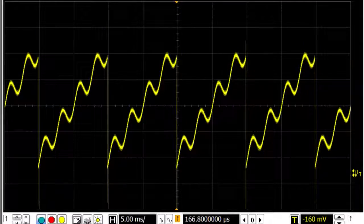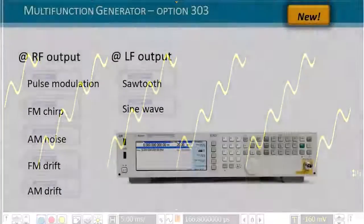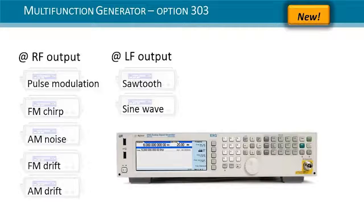And so there you have it. We have not only at RF, five function generators doing the complex pulse radar signal. But with our LF out, we're also doing an additional two function generators with a sawtooth and a sine wave simultaneously out of one instrument.